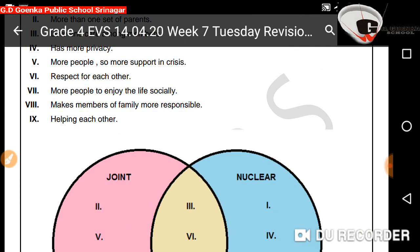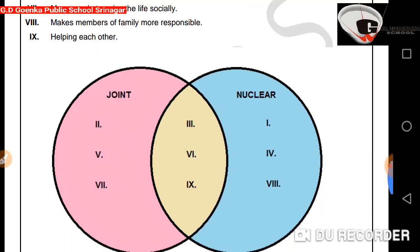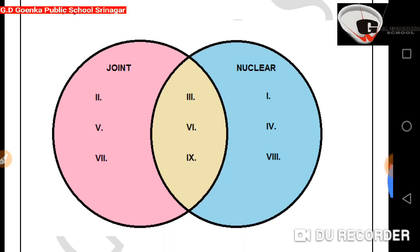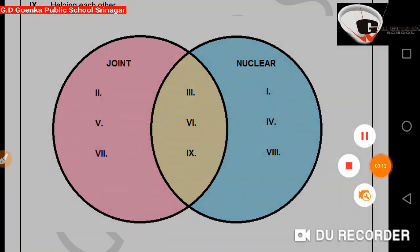The eighth point is makes members of the family more responsible — you will write this in the nuclear family, because there are fewer people, so they become more responsible. The ninth and last point is helping each other — this will go into the common portion, because in both families members help each other.